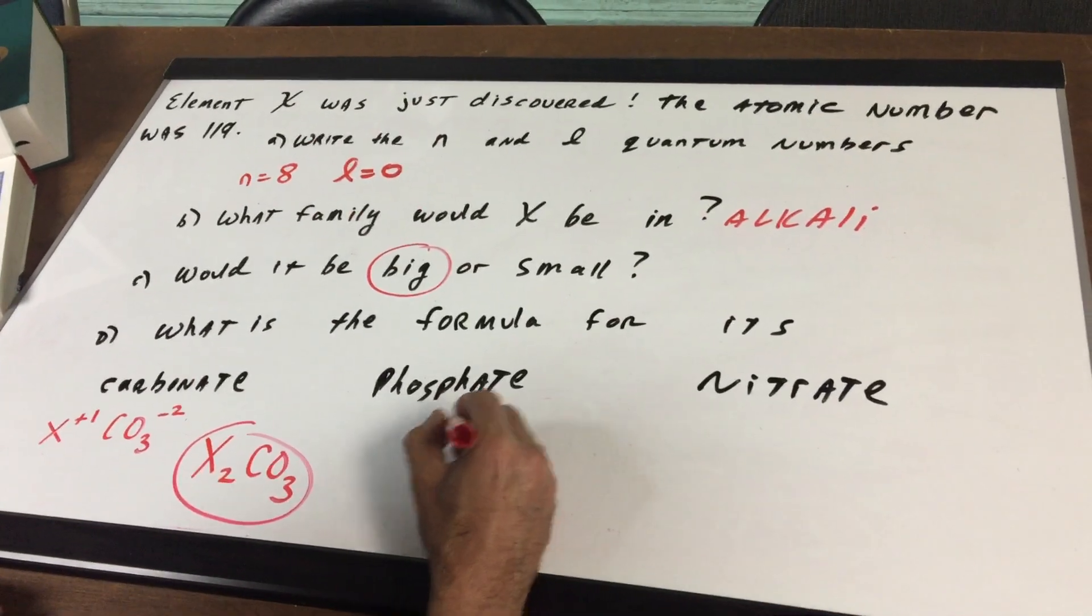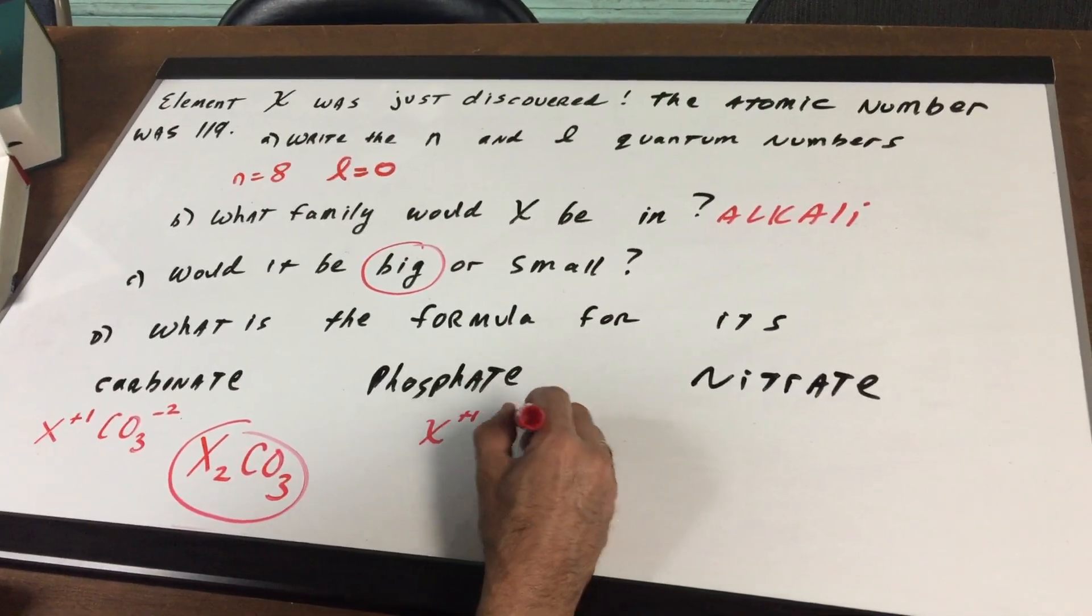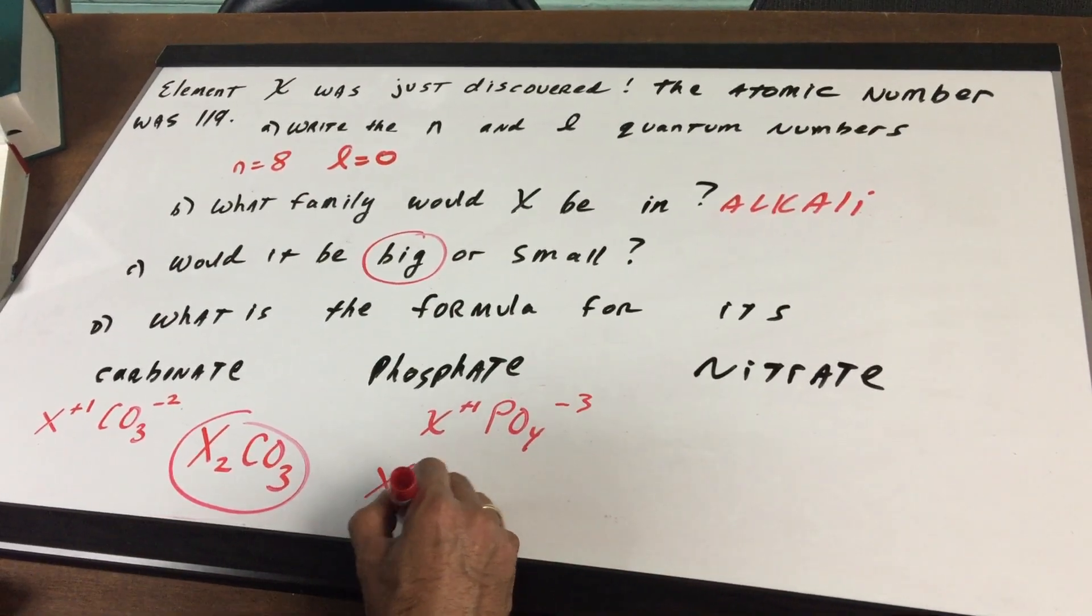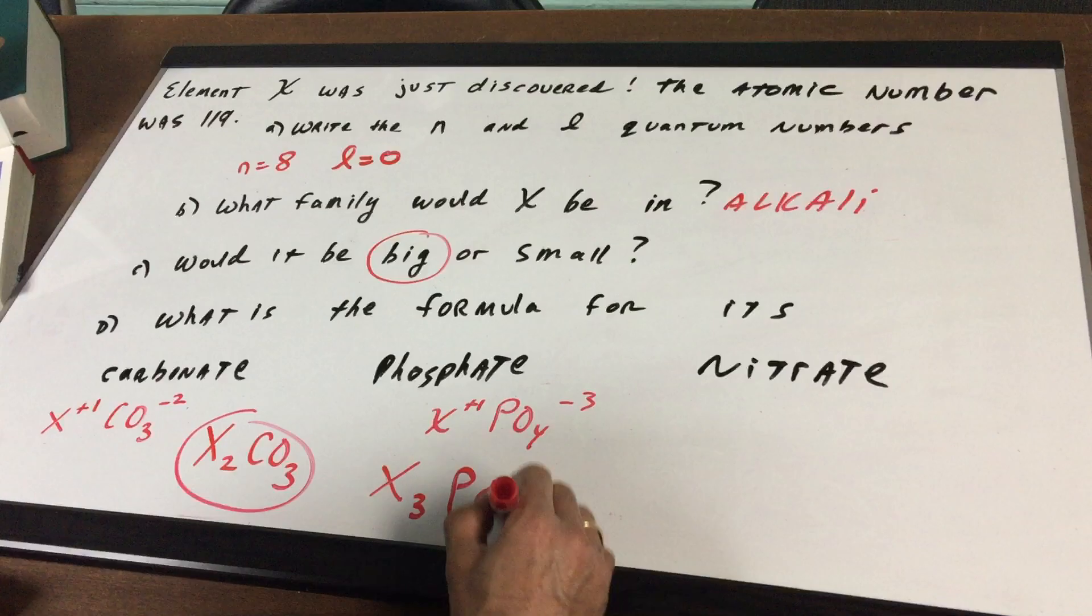Phosphate, again, X is plus 1. Phosphate is PO4 with a minus 3 and that would give me an X3PO4.